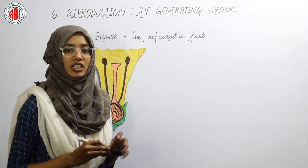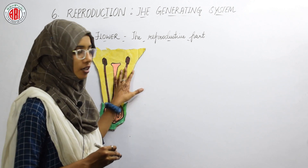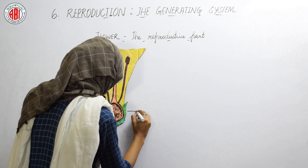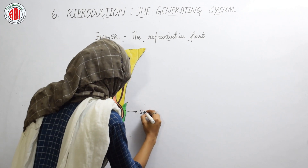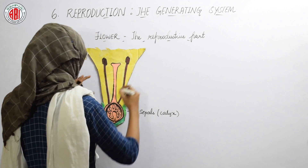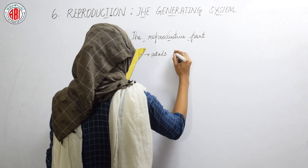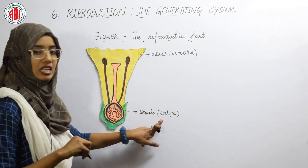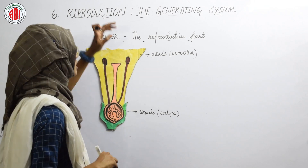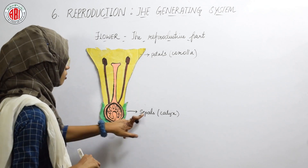Let us talk about the different reproductive parts present in a flower. The green colored part of the flower is called sepals, or calyx. The colored part of the flower is called petals, or corolla. So, calyx is also called sepals and corolla is also called petals.